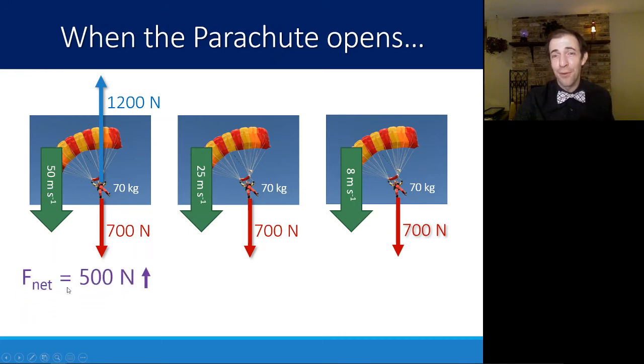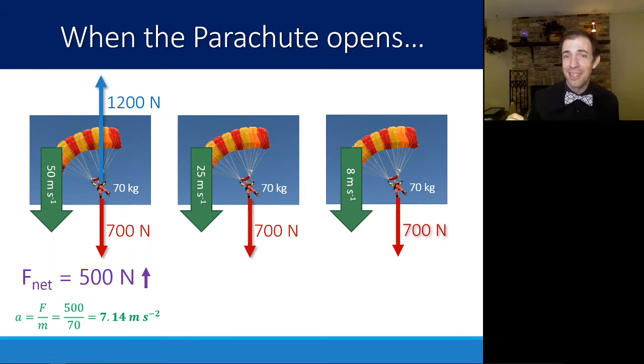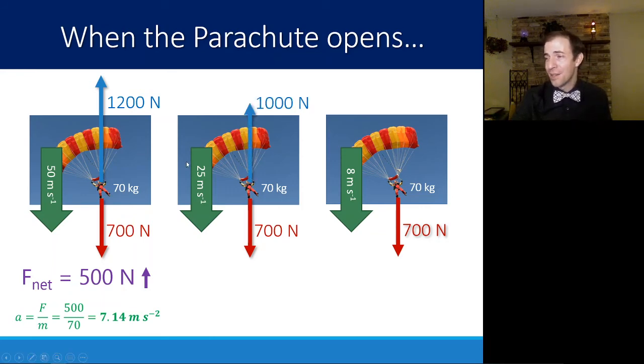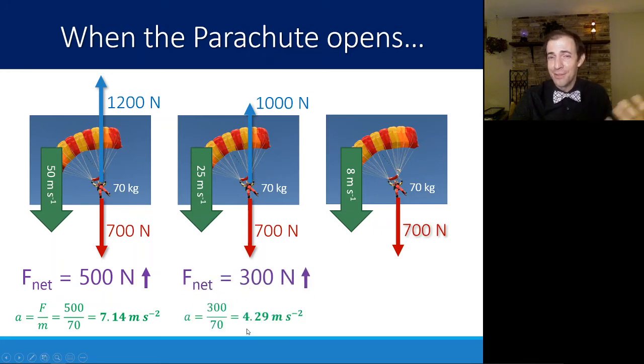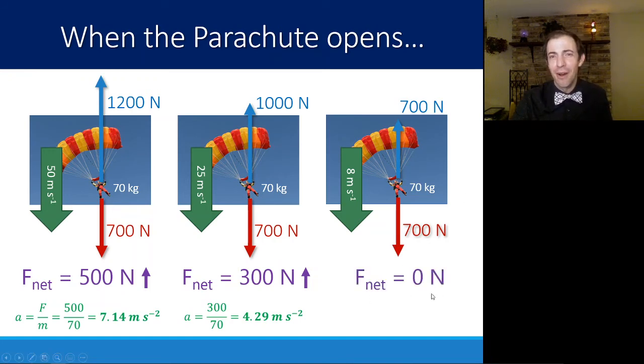Now we have a net force that is going upward. This net force going upward means that we have an acceleration of 7.14 meters per second squared in the upward direction. It's counteracting in some sense the force of gravity. If we start getting slower, that air resistance gets a little smaller because the slower the speed, the smaller the air resistance. Now we have a net force of 300 newtons, so an acceleration of 4.29 pointing up. Then eventually we slow down to the point that finally we reach our equilibrium point again at about 8 meters per second. That's a force of 0 newtons.